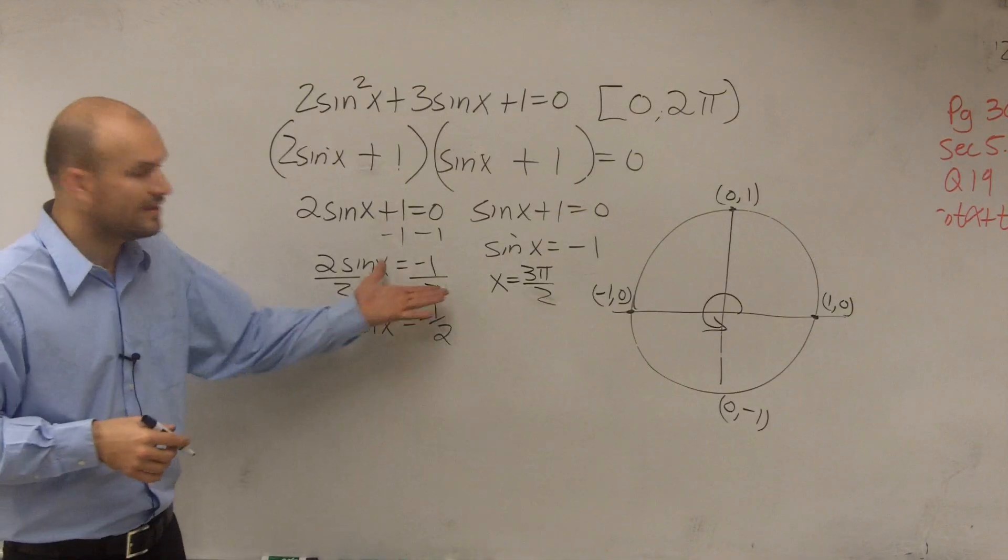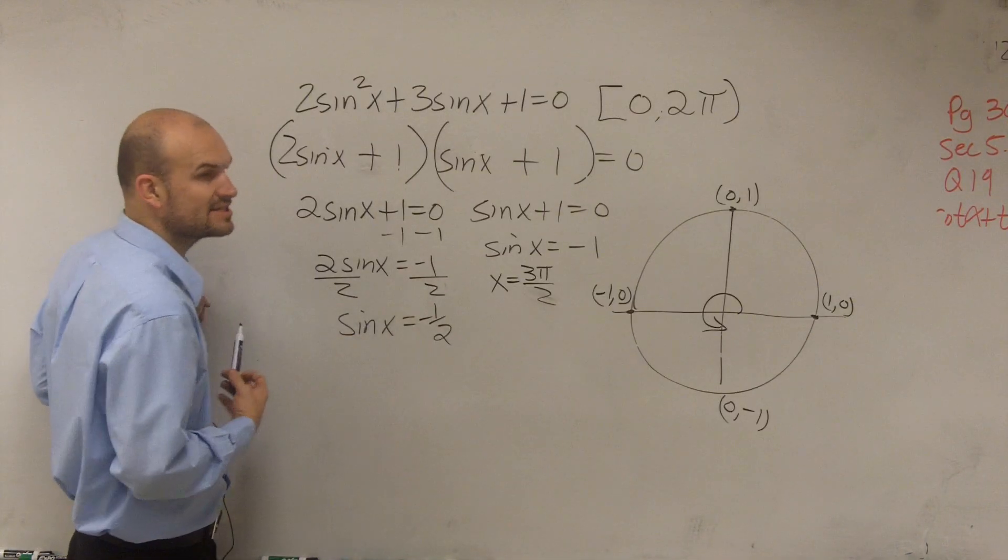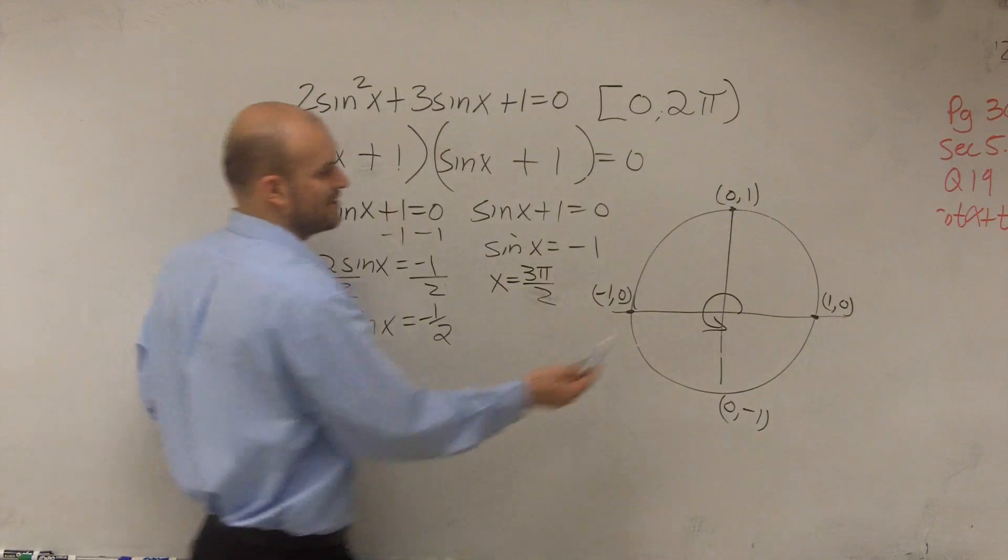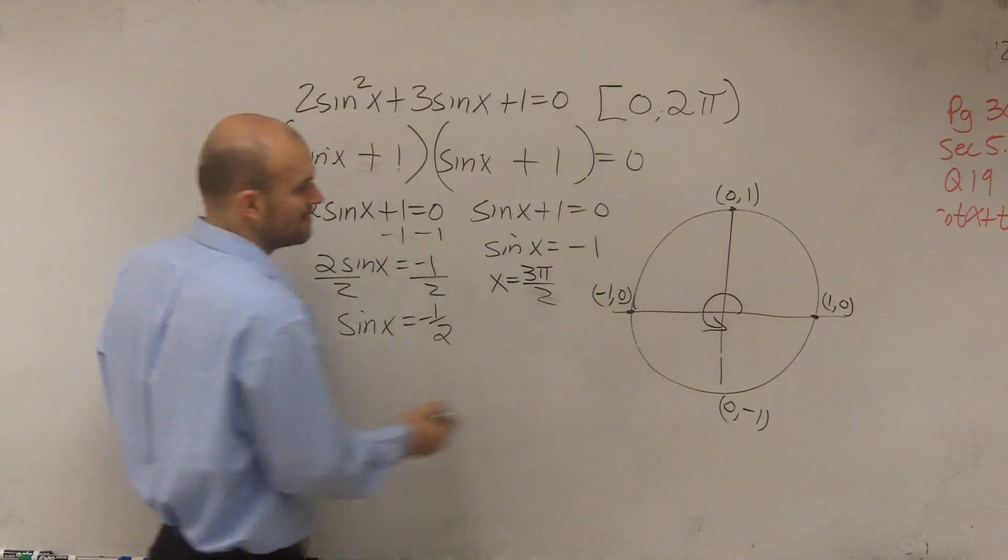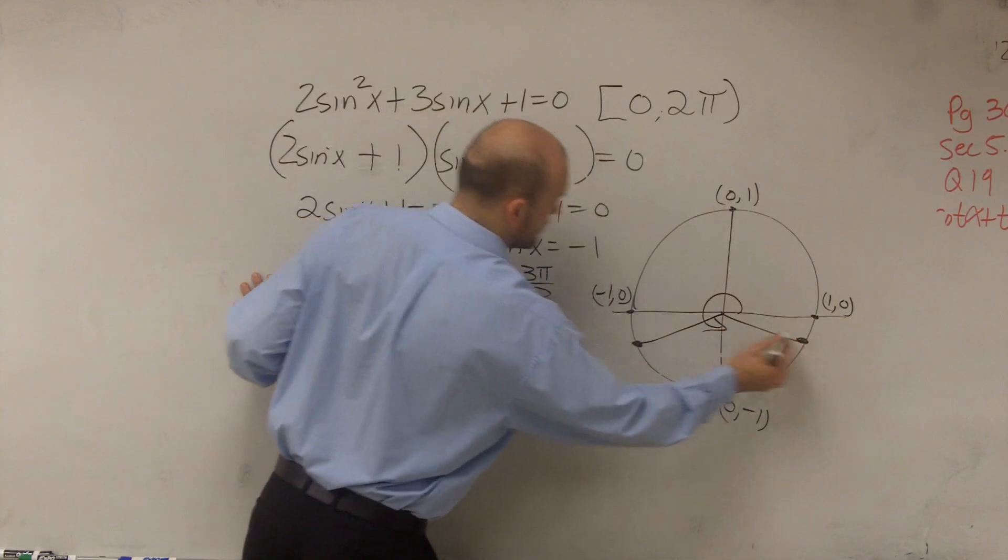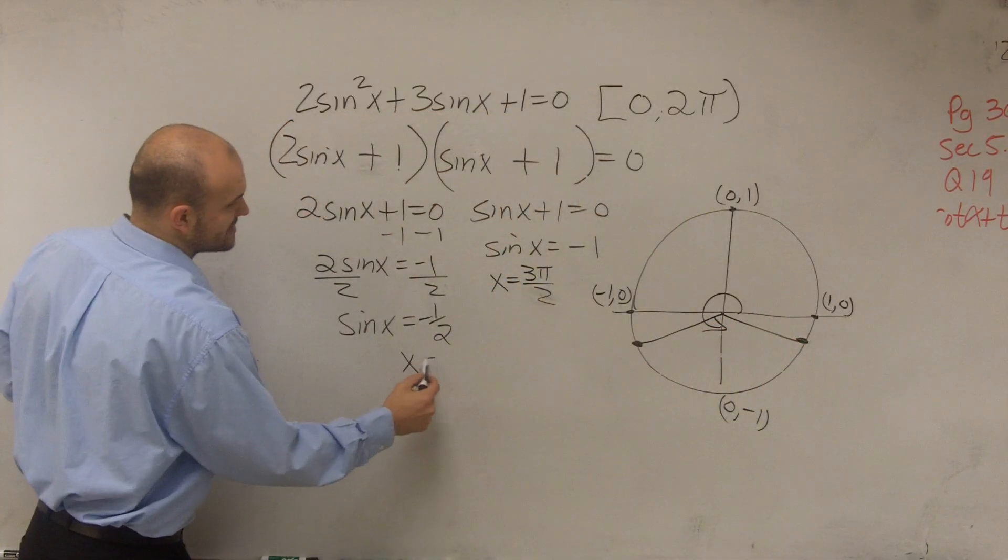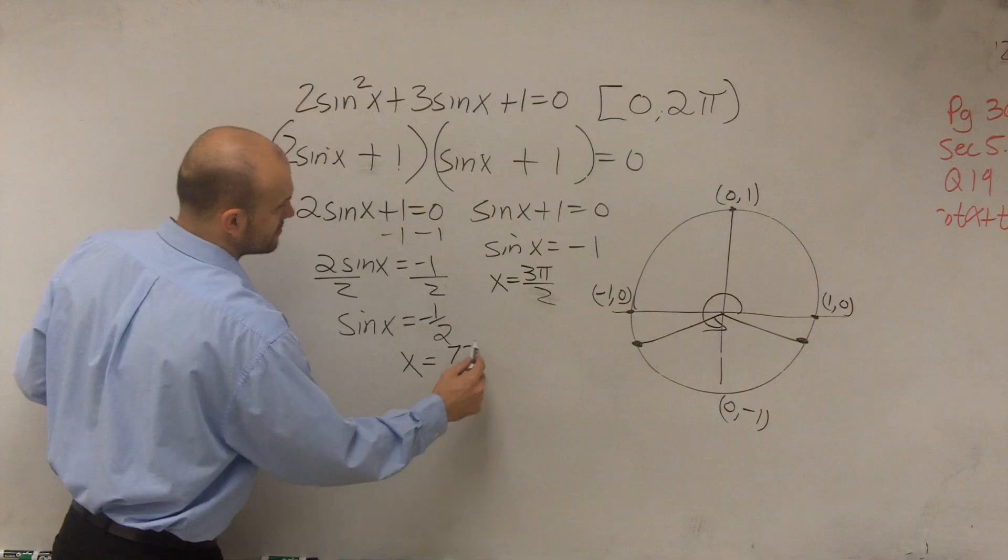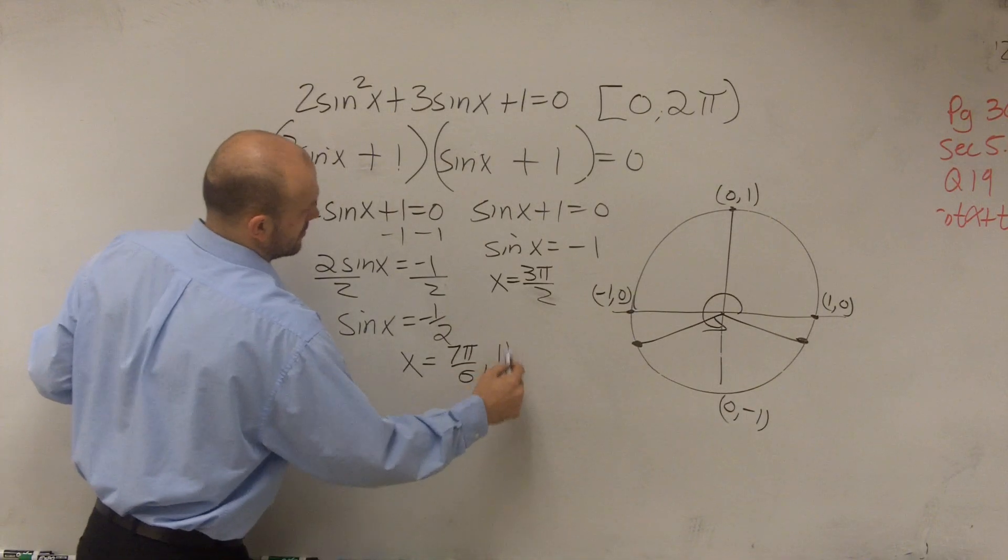All right, then we go and look over here, and we say, when is sine of x equal to negative 1 half? So therefore, that's going to be negative 1 half, which is the problem we've actually already done, which is going to be these two values right here. So therefore, x equals 7π over 6 and 11π over 6.